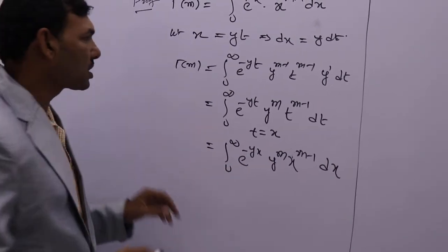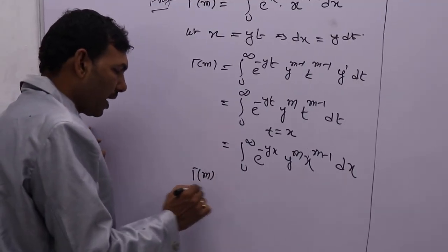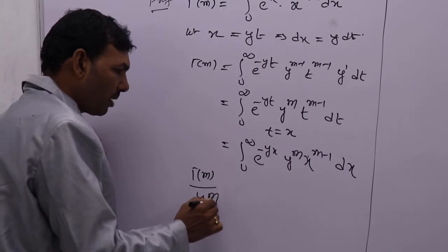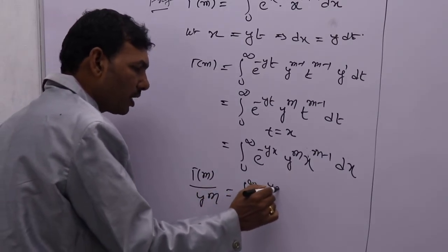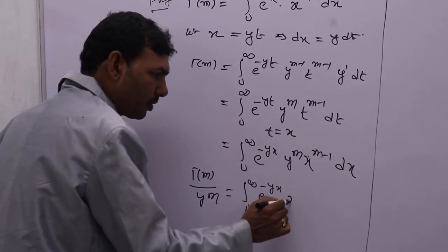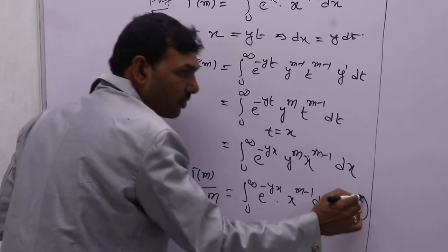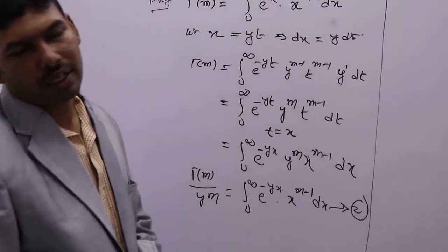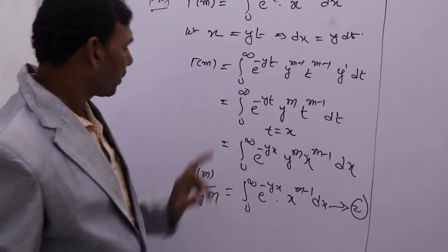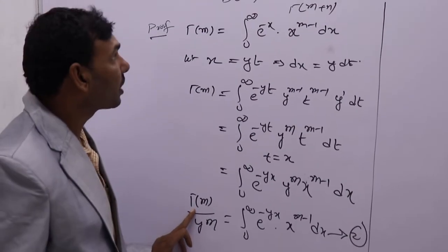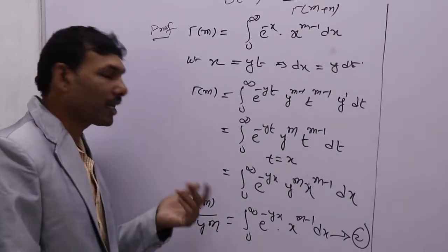Now take y power m to this side. Then gamma(m) by y power m equals the integral from 0 to infinity of e to the power minus yx into x power m minus 1 dx. Take this as equation number 2. Now, we need to get gamma(n) here.